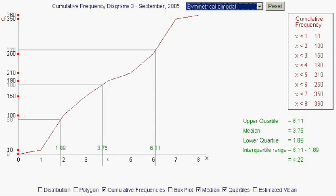Here we're looking at a different distribution, with a different cumulative frequency diagram. The values of the median and quartiles are different, but they're calculated in exactly the same way. The median is the halfway, or 180th value, 3.75, and the quartiles, well, the quarter way value is 90, giving us a lower quartile of 1.89, and the 3 quarter way value at 270 gives us an upper quartile of 6.11.